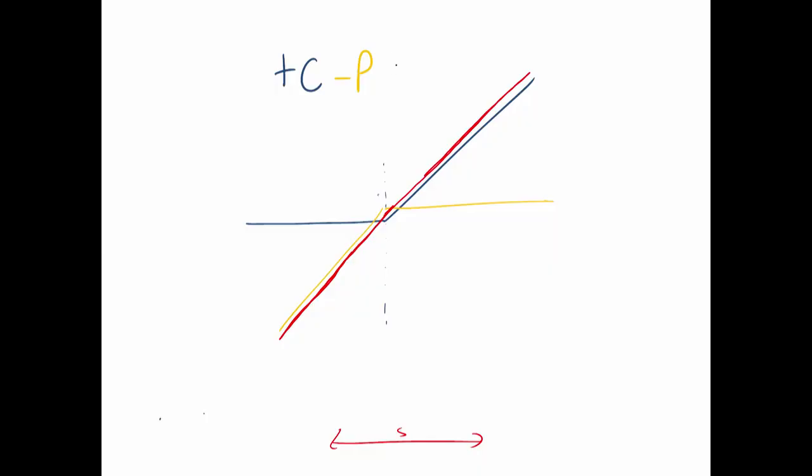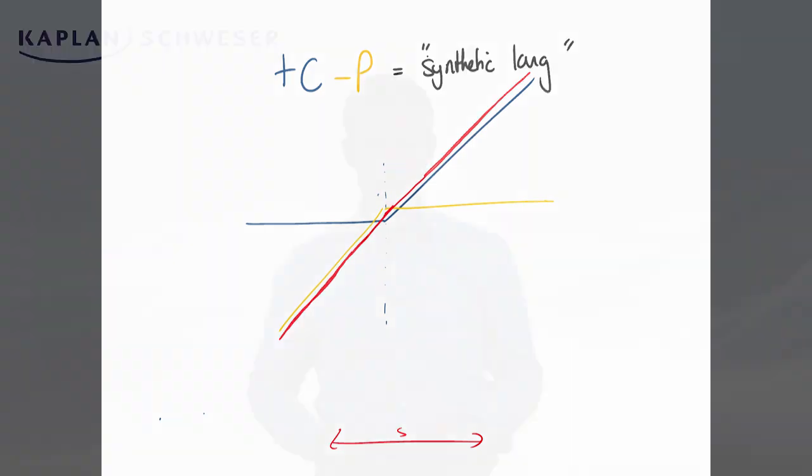The big takeaway here is that you synthesize a long position — a geared position in the underlying, i.e., a forward contract. You synthesize that by taking a long call position and a short put position. A synthetic long here is a synthetic long forward position or a geared position in the underlying — two different ways of referring to it.